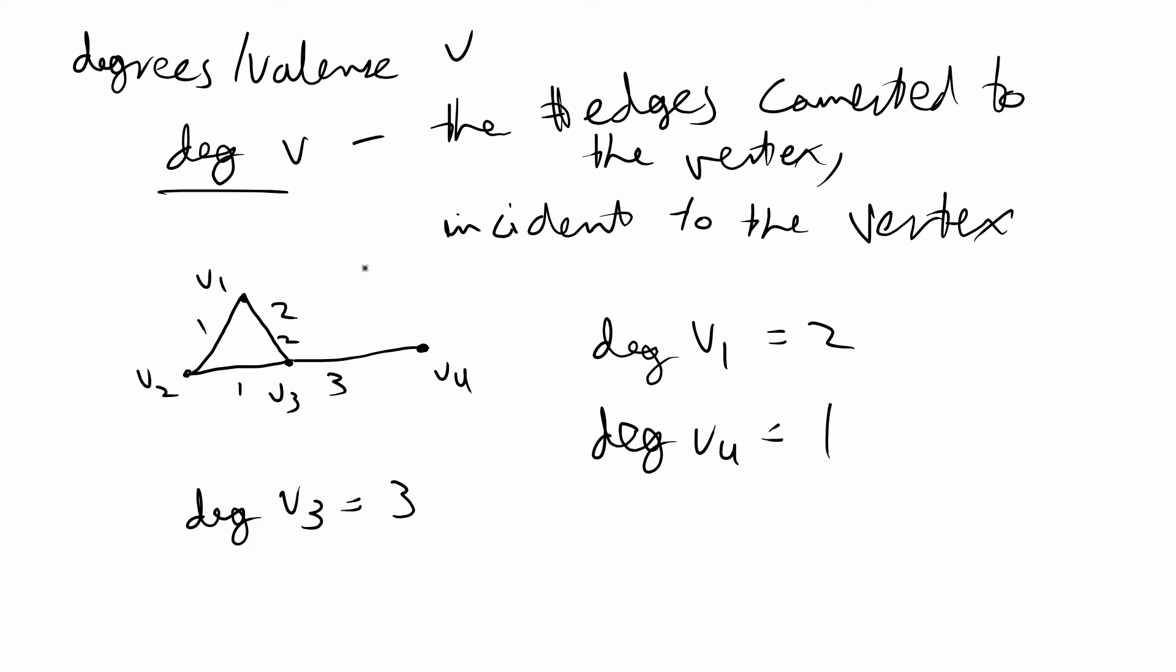When you're talking about loops, so for example if we put the loop on V4, then loops are counted as 2 degrees. So the new degree for V4 would be 1, 2, 3.